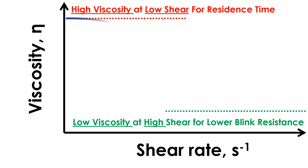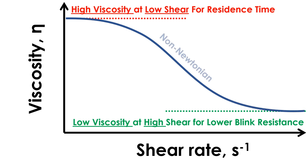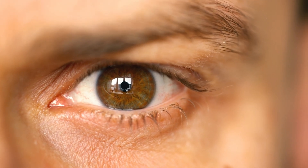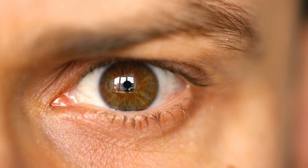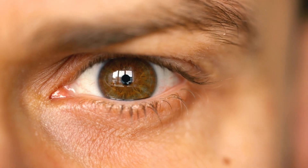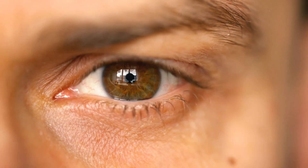Materials which reduce in viscosity as shear rate is increased are described as non-Newtonian, or specifically shear thinning. Suspensions, gels, and emulsions typically display shear thinning behaviour. Shear thinning eye drops will maintain a high viscosity during low shear conditions, but will ideally reduce in viscosity during blinking.